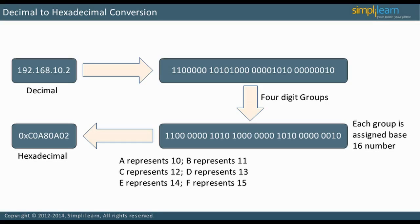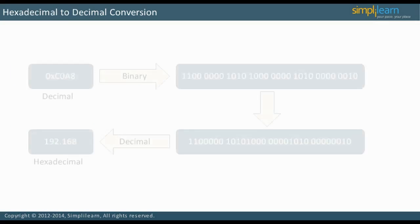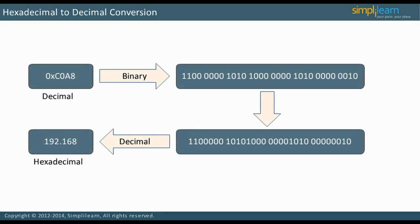In the next slide, let us understand how to convert hexadecimal to decimal. To convert hexadecimal C0A8 into decimal, first convert each hexadecimal digit to binary as shown on the slide. Gather 8 bits into each group. Now this should look familiar — it is straightforward binary to decimal conversion. We have converted the first two octets of an IPv4 address: 192.168.